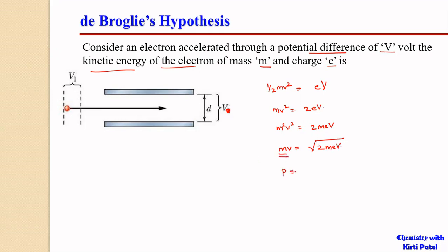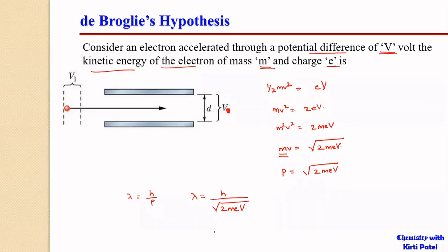Taking the square root of both sides we get mv = √(2meV), so momentum P = √(2meV). Substituting into the de Broglie equation λ = h/P, we get λ = h/√(2meV), where V is the potential difference through which the electron has been accelerated, e is the charge, and m is the mass. Any particle with charge e and mass m accelerated to potential difference V has its wavelength calculated using λ = h/√(2meV).